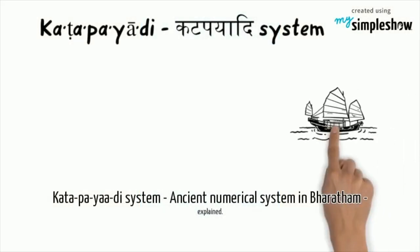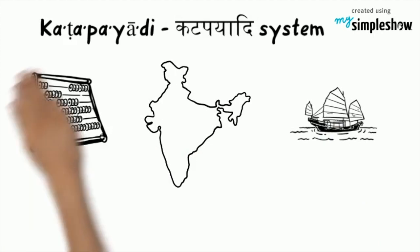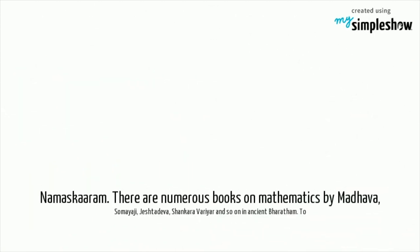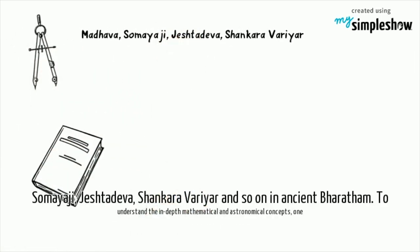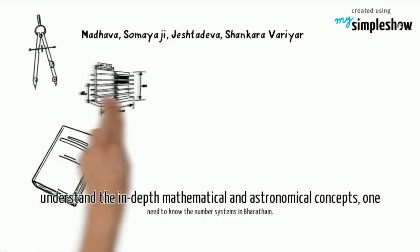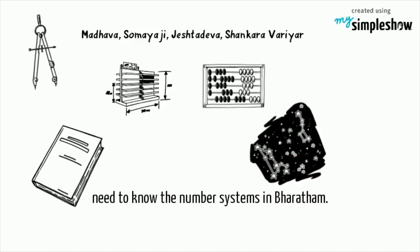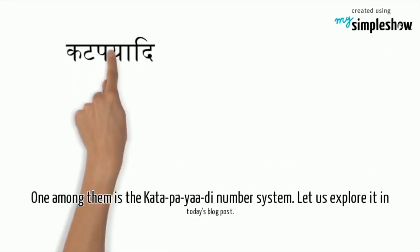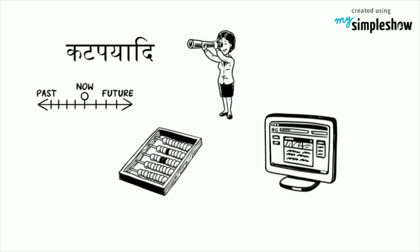Kata Piyadi System — an ancient numerical system in Bharatam, explained. Namaskaram. There are numerous books on mathematics by Madhava, Samayaji, Jashtadeva, Shankaravaryar and so on in ancient Bharatam. To understand the in-depth mathematical and astronomical concepts, one needs to know the number systems in Bharatam. One among them is the Kata Piyadi number system. Let us explore it in today's blog post.